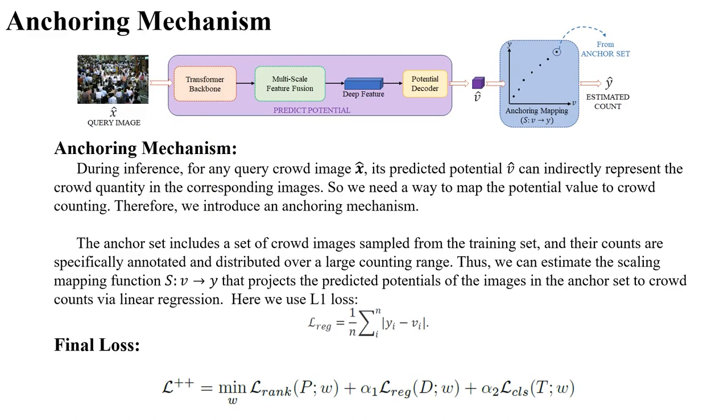During inference, for any query crowd image, its predicted potential can indirectly represent the crowd quantity in the corresponding images. However, while the predicted potential values are proportional to the actual number of people, they exist in different linear spaces. Therefore, we introduce an anchoring mechanism here to perform the mapping. The anchor set includes a set of crowd images sampled from the training set, and their counts are specifically annotated and distributed over a large counting range. Thus, we can estimate the scaling mapping function that projects the predicted potentials of the images in the anchor set to crowd counts via linear regression.